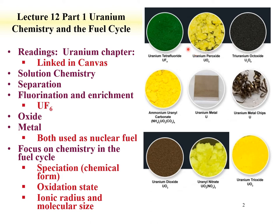U₃O₈ is a mixed oxidation state and appears black. Uranium metal is obviously metallic—shown here as chips or turnings. UO₂, which is uranium-4, is also shown. Solids can often have slightly different colors even for the same compound based upon some morphological differences.